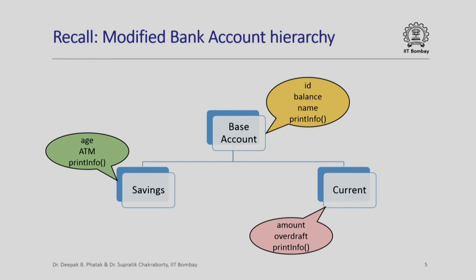Now recall the bank account hierarchy that we have studied earlier. We are going to look at a part of the hierarchy where there is a base account, a savings account derived from it, and a current account also derived from it. The base account has three data members: ID, balance, and name, and it has a member function called print_info. The savings class, derived from the base class, has two additional data members: age and ATM, and it also has a member function named print_info — the same name as the one in the base class. Similarly, the current class has two additional data members: amount and overdraft, and also has a member function print_info with the same name as in the base class.